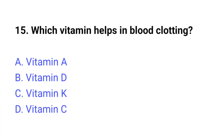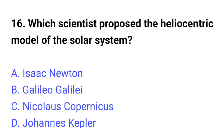Question number fifteen: which vitamin helps in blood clotting? The right answer is option C, Vitamin K. Question number sixteen: which scientist proposed the heliocentric model of the solar system? The right answer is option C, Nicholas Copernicus.